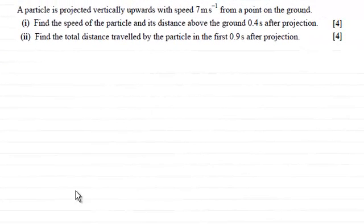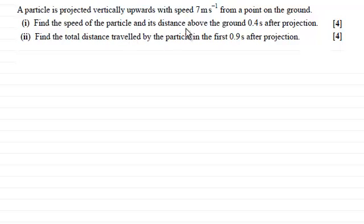Now in this question, we're given that a particle is projected vertically upwards with a speed of 7 metres per second from a point on the ground. In the first part, we've got to find the speed of the particle and its distance above the ground 0.4 seconds after projection. And then in part two, to find the total distance travelled by the particle in the first 0.9 seconds after projection.